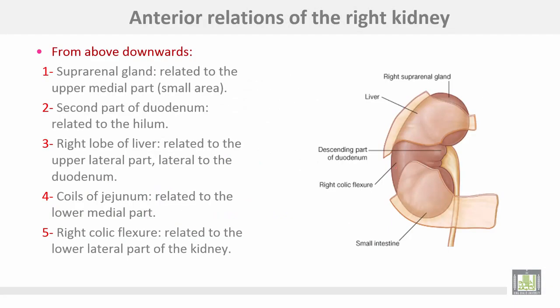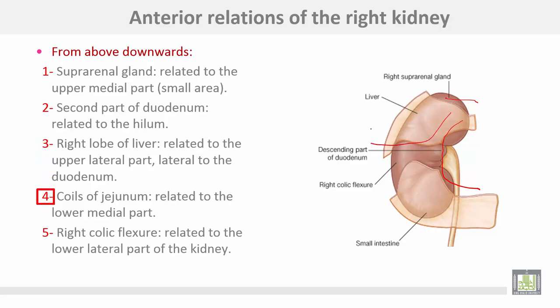The anterior relations of the right kidney from above downwards: number one, the suprarenal gland related to the upper medial part for a small area; number two, the second part of the duodenum; number three, the right lobe of the liver related to the upper lateral and lateral to the duodenum; number four, coils of jejunum and ileum related to the lower medial part; number five, the right colic flexure or hepatic flexure related to the lower lateral part of the kidney.